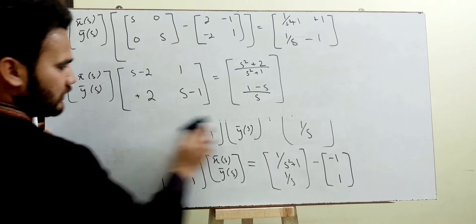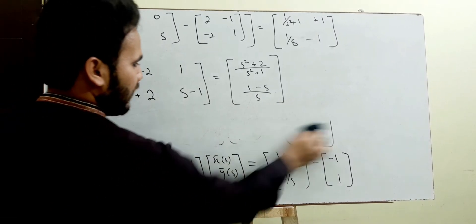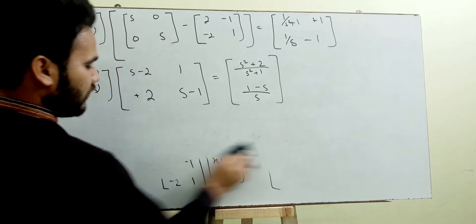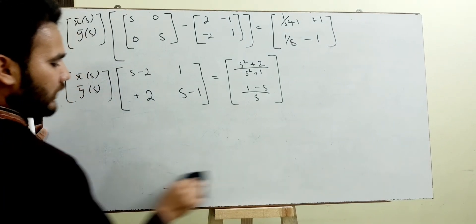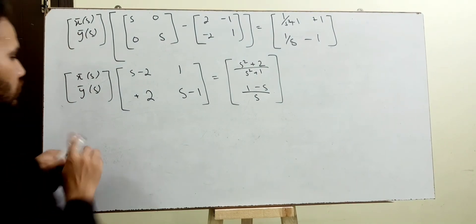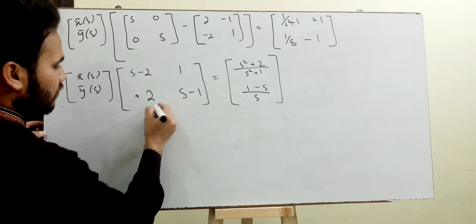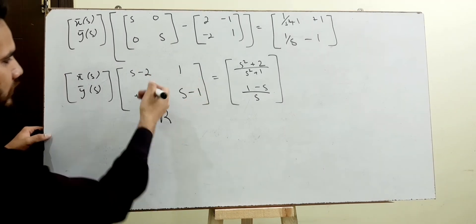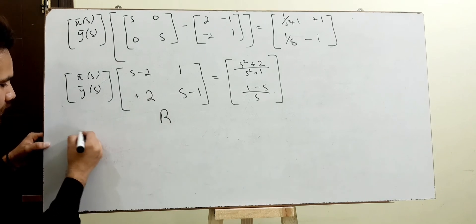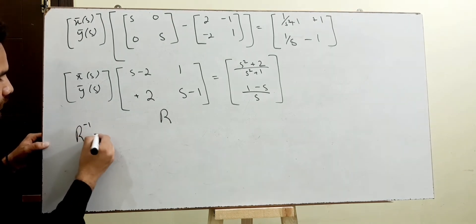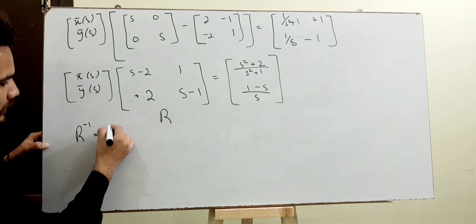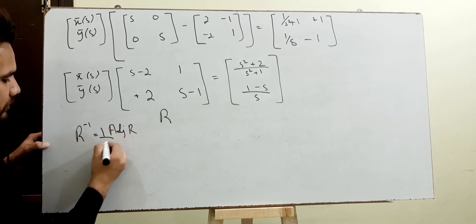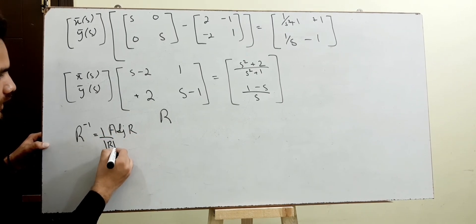Now I need an inverse matrix. I can multiply both sides by R inverse to get X̄(s) and Ȳ(s). Let's call this matrix R. R inverse equals the adjoint of R multiplied by 1 over the determinant of R.